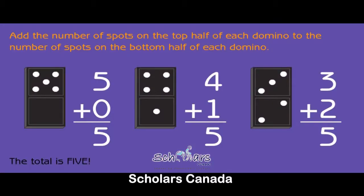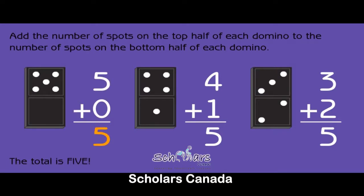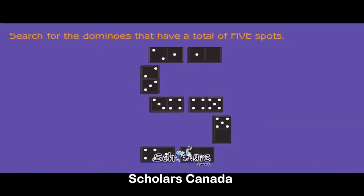Add the number of spots on the top half of each domino to the number of spots on the bottom half. The total is five. Five plus zero is five. Four plus one equals five. Three plus two equals five. Search for the dominoes that have a total of five spots.